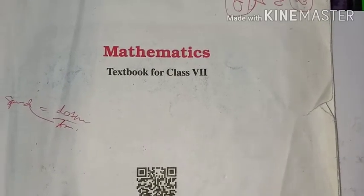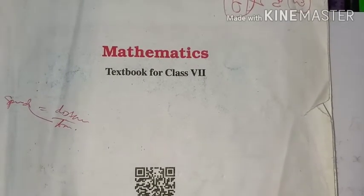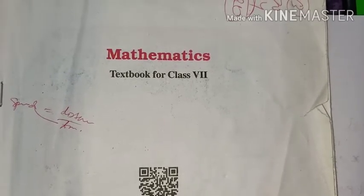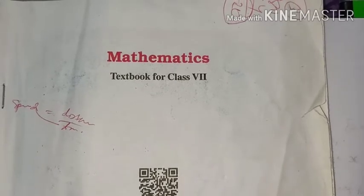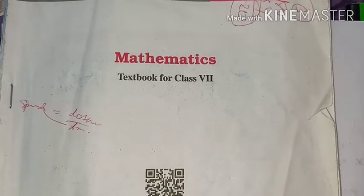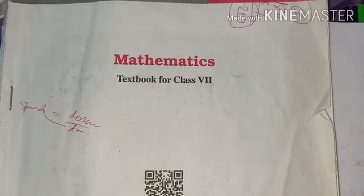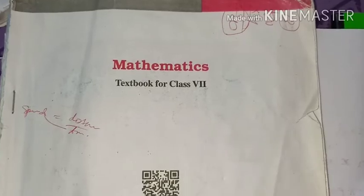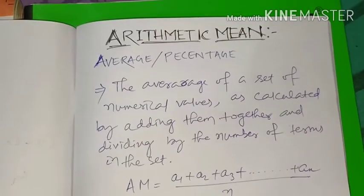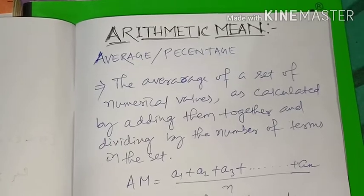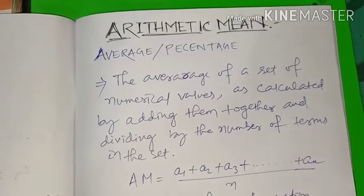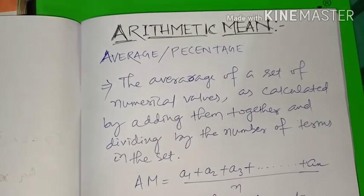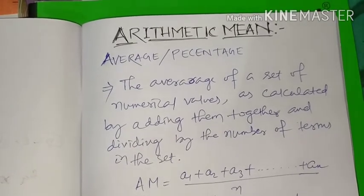Good morning students. As you have discussed the different types of graphs — bar graph, double bar graph — let us now study a few things about data handling, specifically representative values. The relative value, also known as central tendency, includes mean, median, and mode. First of all, we will discuss mean, that is arithmetic mean.